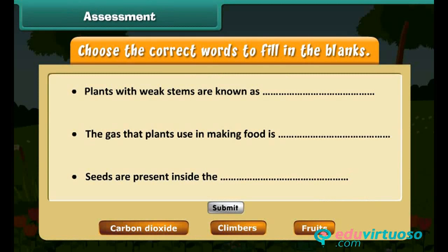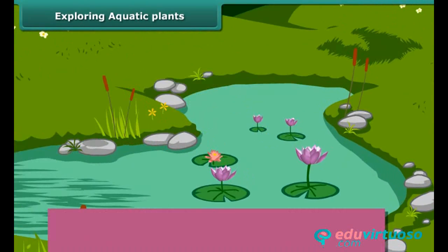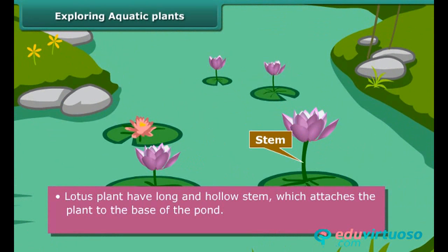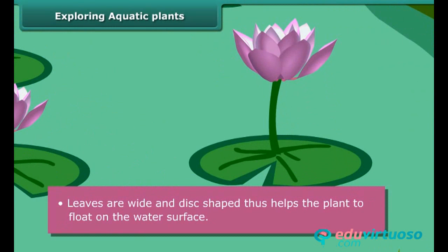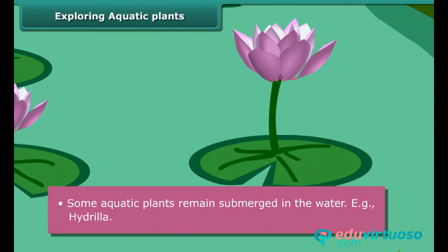Now it's time to have some fun. Students, you might have seen lotus floating in ponds and lakes. These plants show various adaptations to live in water. Lotus plants have a long and hollow stem which attaches the plant to the base of the pond, and their roots are short. Their leaves are wide and disc-shaped, which helps the plant float on the water surface. Some aquatic plants remain fully submerged in water, for example, hydrilla.